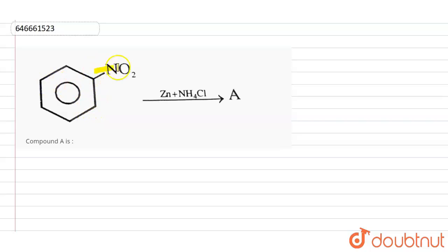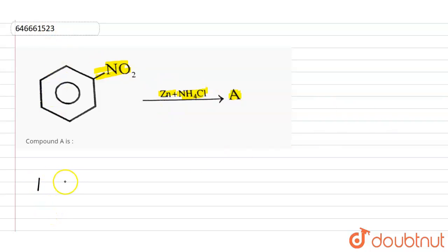Hello students. This question asks that nitrobenzene is reacting with zinc and NH4Cl — what compound A will be formed? So first of all, let's see what will happen.